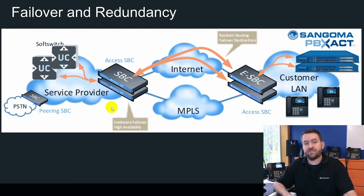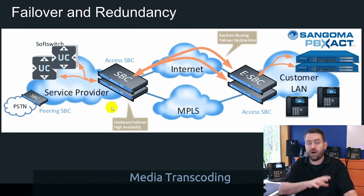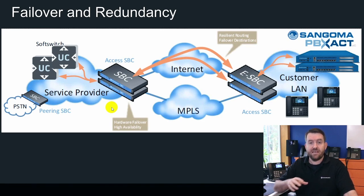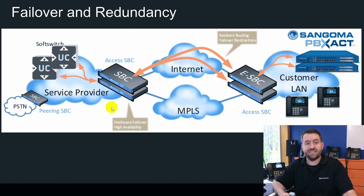One more use case for the Sangoma SBCs is for instances where you need to do media transcoding. You can offload the transcoding to the SBCs and take that load off of your PBX. This would allow you to, for instance, maintain high bandwidth and high quality codecs for local phones on your LAN and sites with sufficient internet bandwidth. However, the SBC can also transcode audio into more compressed codecs in situations where bandwidth is limited. As you can see, there are tons of use cases for Sangoma SBCs and we really just started to scratch the surface here. In the next video, we'll cover the various models of SBCs in Sangoma's line of products. I hope you enjoyed this video and we'll see you in the next one.